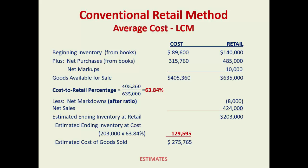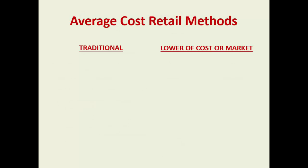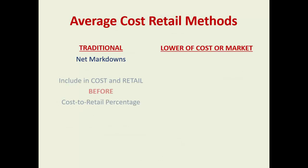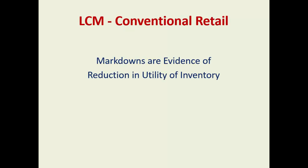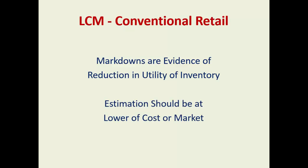The key question is: when do you use that ratio? I'm going a little faster with this video than the prior one — you should probably watch the average cost method first, then watch this conventional retail method. There will also be a PowerPoint available if you want to print the slides. With the average cost retail method, the traditional net markdowns are included in cost and retail before the percentage. With the lower of cost or market — the conventional retail — net markdowns are included after. It's just one change, but it can make a big difference. Markdowns are evidence of a reduction in utility of inventory, which is the argument for this method. The estimation should be at lower of cost or market.